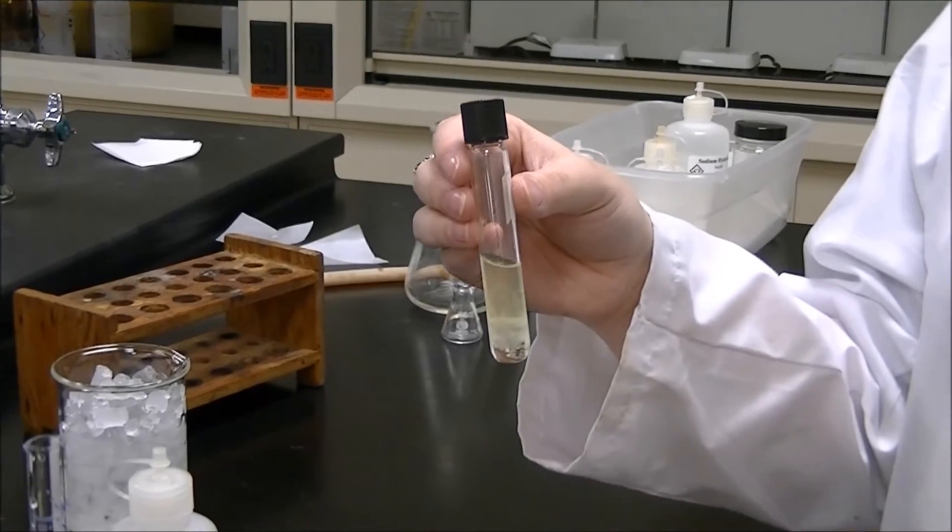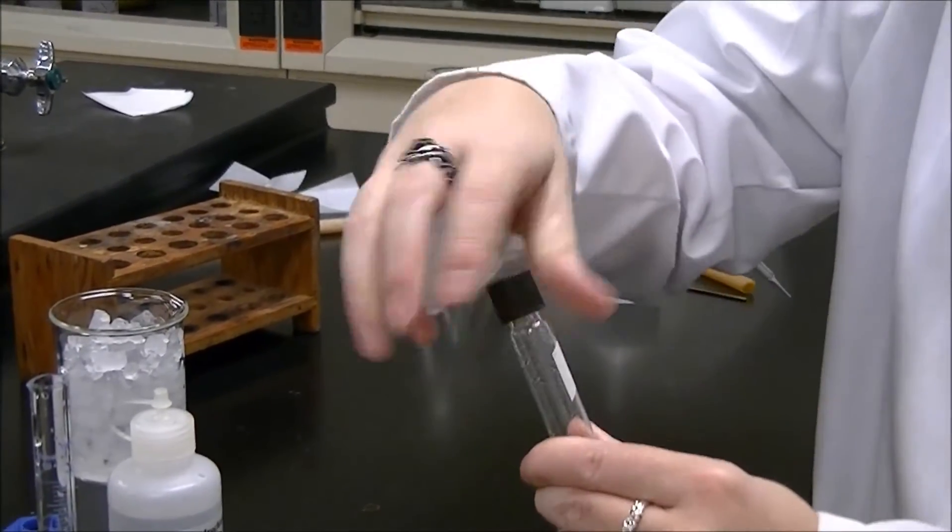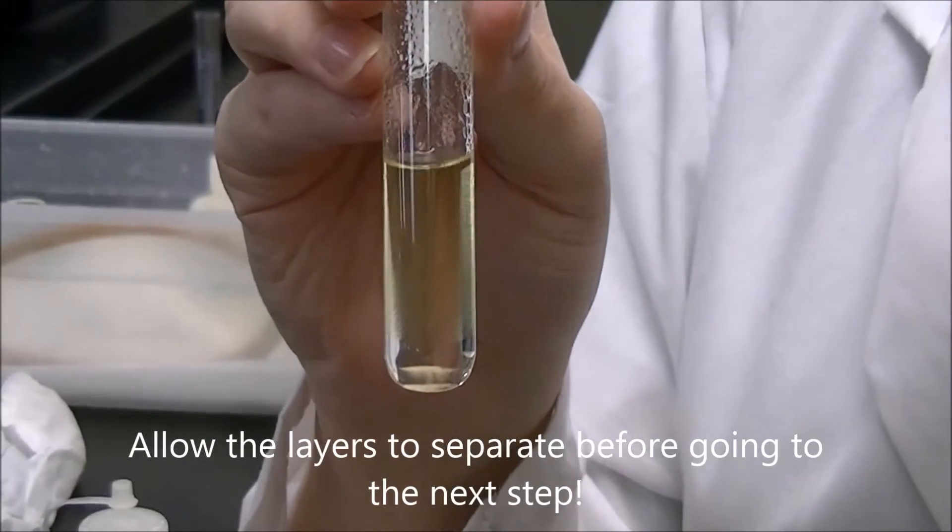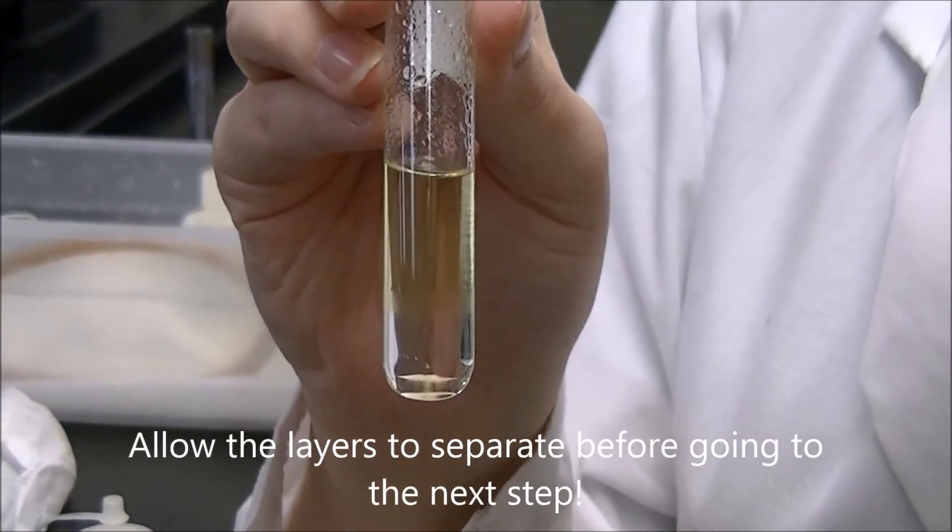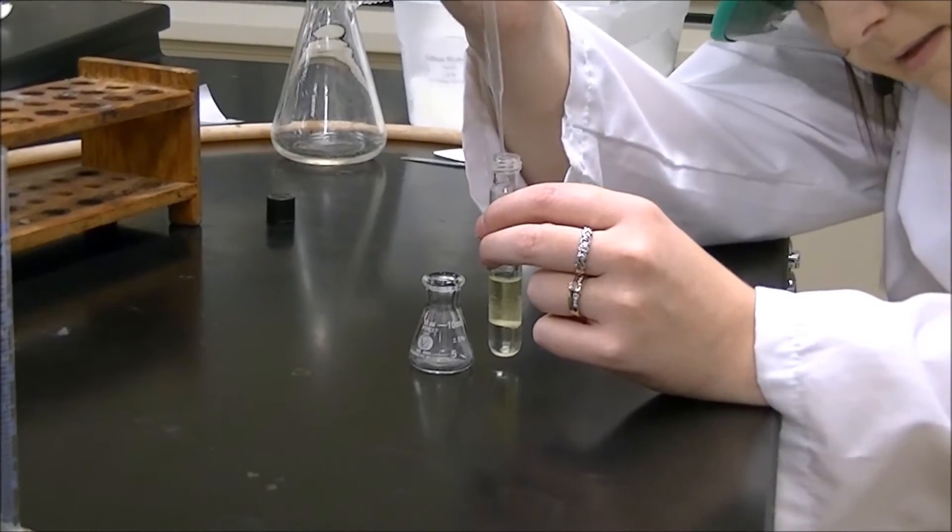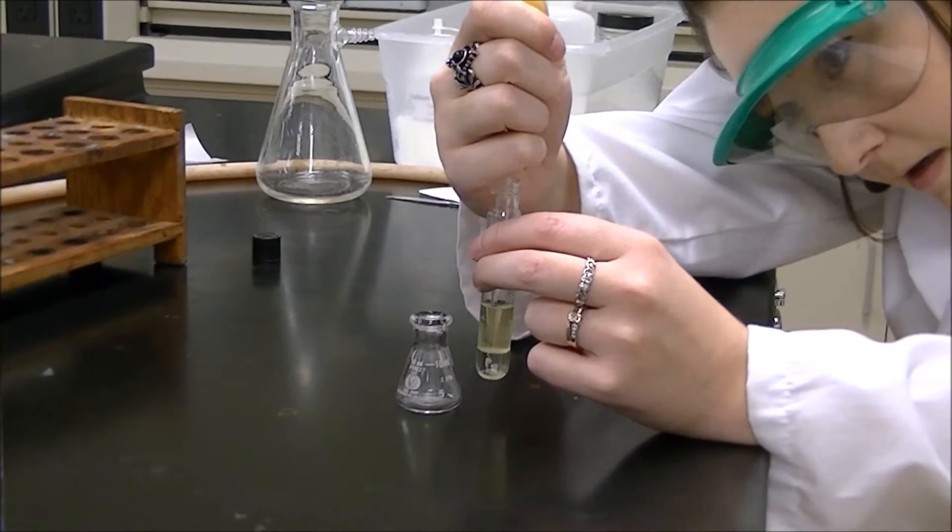Once you've added your acid, invert with venting. Remove the bottom aqueous layer and place in a 10-milliliter Erlenmeyer flask.